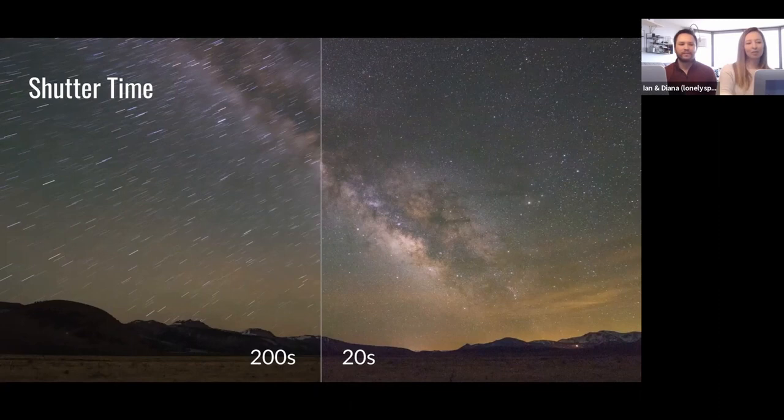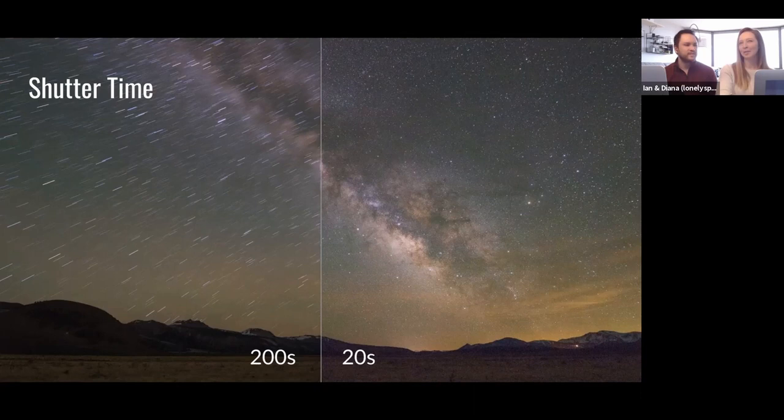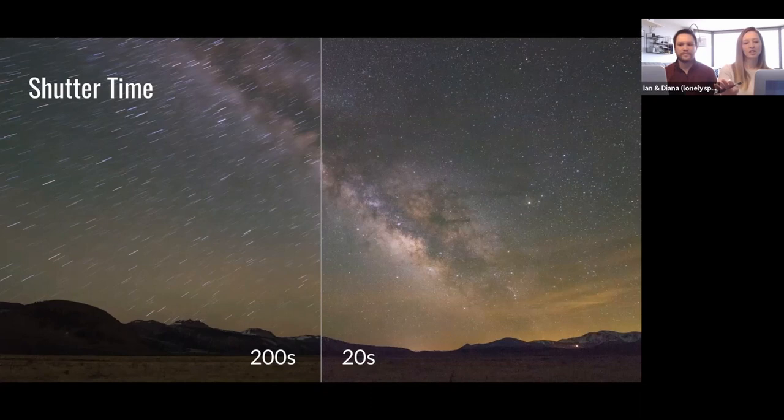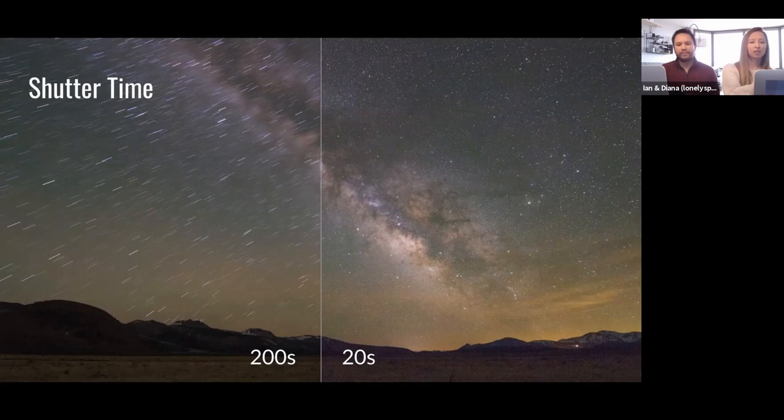And sometimes this is the result that you want. If you saw our presentation that we did last weekend pre-conference for Out of Chicago, that was actually the goal of the type of photography that we were doing there. So we were doing star trails images and we were shooting for something like this. But if we're just going for our traditional Milky Way photography and trying to shoot for pinpoint stars, then we want to make sure that we're getting the longest exposure that we can get without those stars trailing.